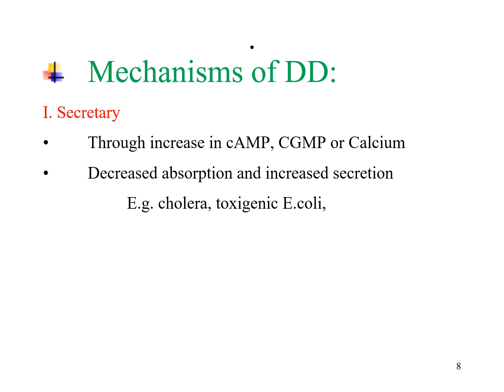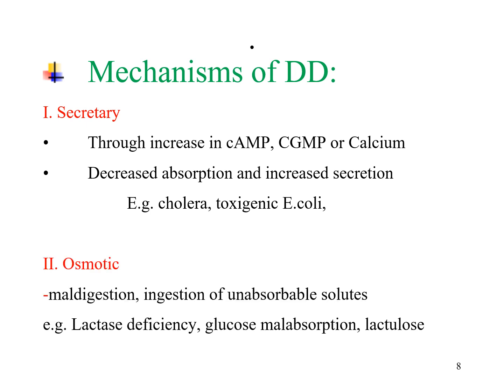Secretory diarrhea occurs through increasing cAMP, cGMP, or calcium, causing decreased absorption and increased secretion. For example, cholera and toxigenic E. coli can cause secretory diarrhea. Osmotic diarrhea is due to maldigestion or ingestion of unabsorbable solutes, such as due to lactase deficiency or glucose malabsorption. Importantly, secretory diarrhea does not stop when a person stops feeding, whereas osmotic diarrhea may decrease or stop when a person stops eating.